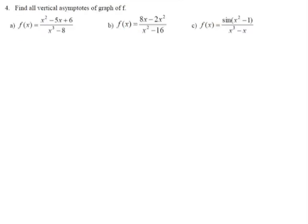Now let's look at question number four. In the first part, we will determine the vertical asymptotes. The function F is given by x squared minus 5x plus 6 over x cubed minus 8.